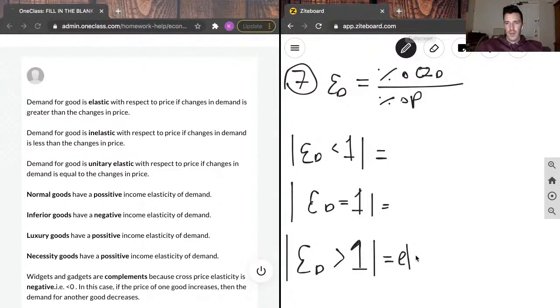If it's greater than one, we see that it's elastic. That means that the numerator, when there's a change in price, the numerator changes more than the denominator. So, you're responsive to it.